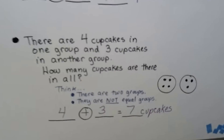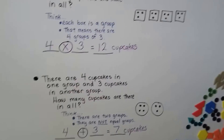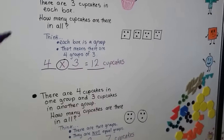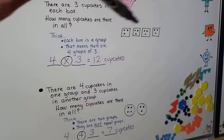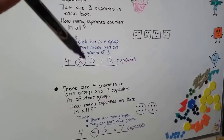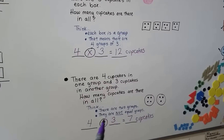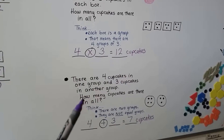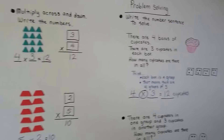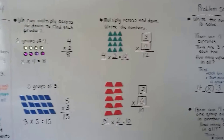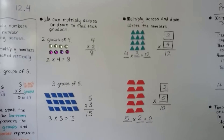We can tell in a word problem whether we have to multiply or add, because we can see if the groups are equal or not. If we have equal groups, we're going to do multiplication. If we don't have equal groups, that's a clue that we need to add. Remember, you can multiply across in a number sentence or vertically up and down.